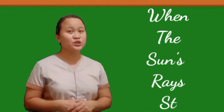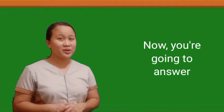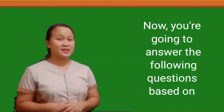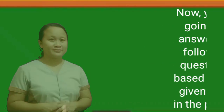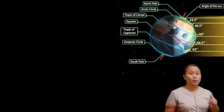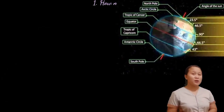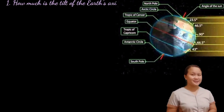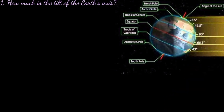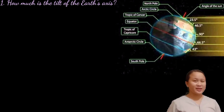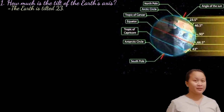Let's have an activity entitled 'When the Sun's Rays Strike.' You are going to answer the following questions based on the given picture. Question number one: How much is the tilt of the Earth's axis? The answer is the Earth is tilted 23.5 degrees.